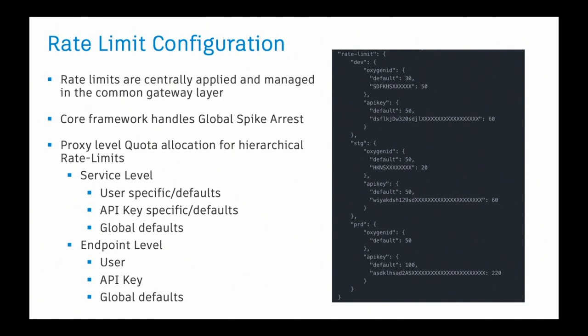That's our first level. The next level is for every service proxy, we apply rate limits. Those rate limits have a hierarchy: you can apply rate limit per user ID — we have a system called Oxygen which is our managed identity system. We apply rate limits per user, per API key, and per endpoint as well. Even at the endpoint level, you have these levels of hierarchy where you can apply user-level or API key-level controls. If nothing applies, then there's a global default — it cannot go beyond that. If everything fails, there's a global spike arrest which is taking care of your system.